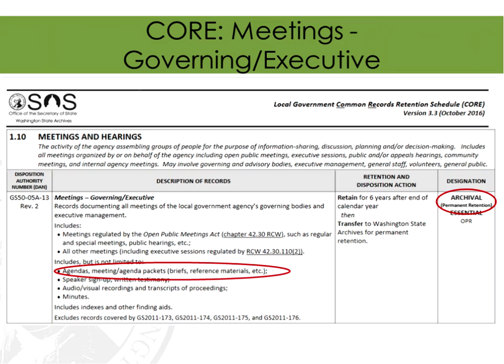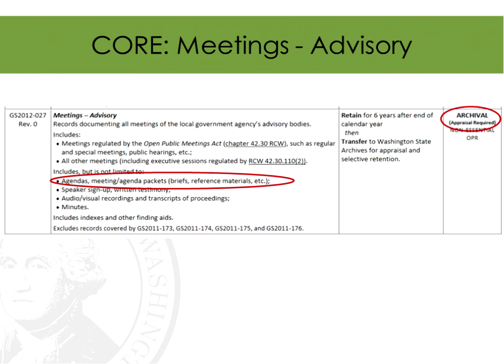The same series appear in the CORE for local government. Multiple types of records are listed and all are eligible for transfer. The paper version can be transferred to the appropriate branch archives, and audiovisual recordings or scans of the paper records can be transferred to the digital archives.